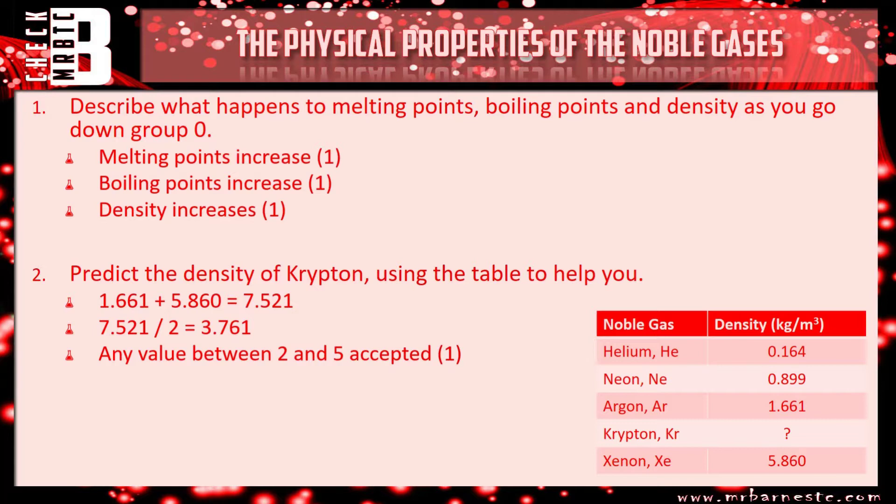Any value between 2 and 5 would actually been accepted. As long as you're going somewhere in the middle of those two points you will get the mark. And just for curiosity purposes the actual density was 3.740. So our prediction was pretty close.